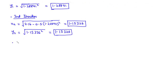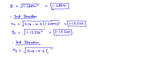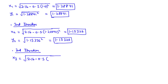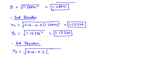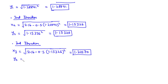For the third iteration, x3 equals the square root of 2.16 minus 0.5 times y2 squared, using y2 = 1.15326. Computing this gives x3 equals 1.22270. And y3 equals the square root of 1.22270 squared, which again equals 1.22270.